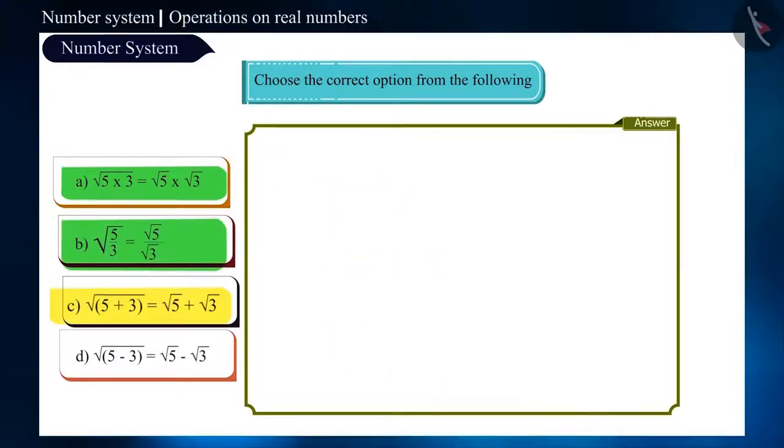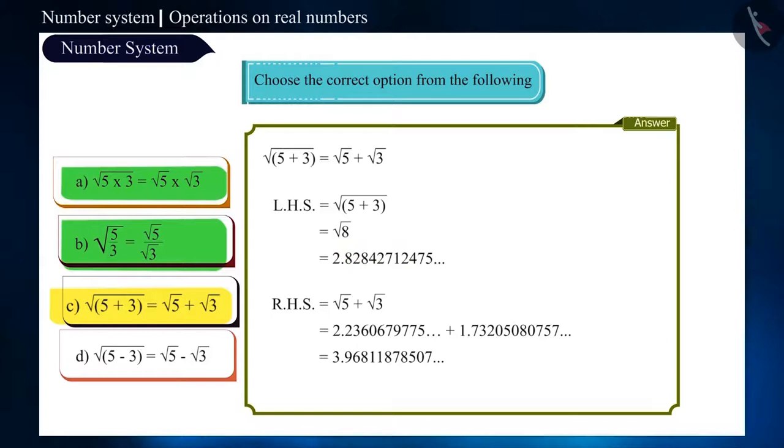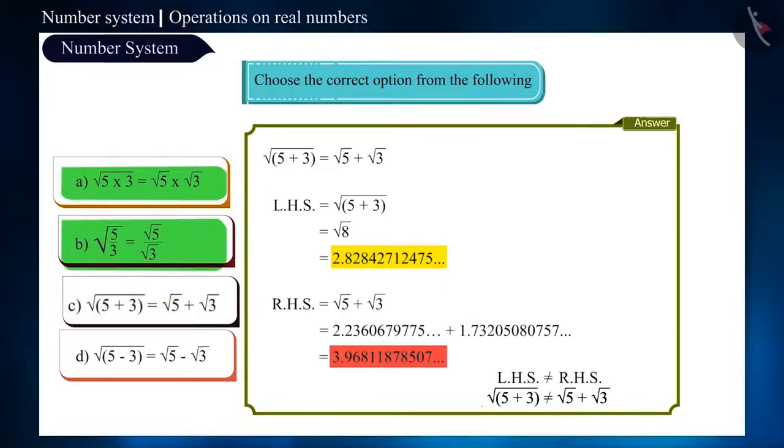Let us repeat the same process in option C and find the values to check. You can see the value of root of 8 is not equal to the value of root of 5 plus root of 3. Therefore, this option is incorrect.